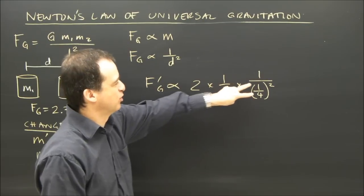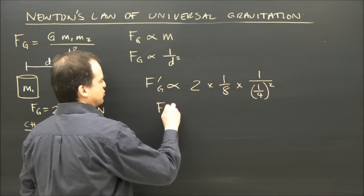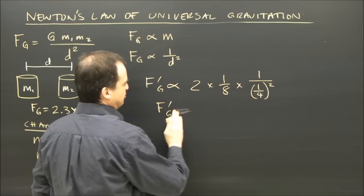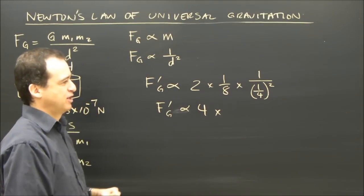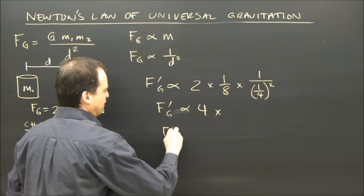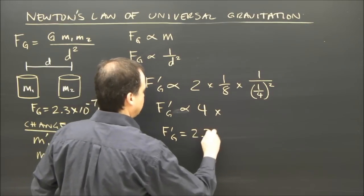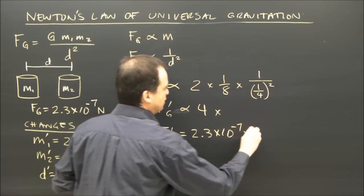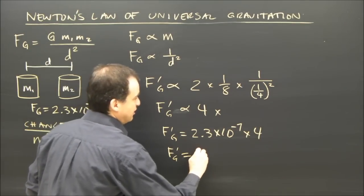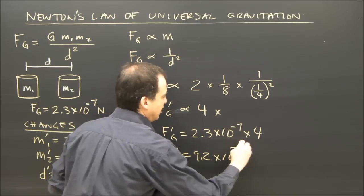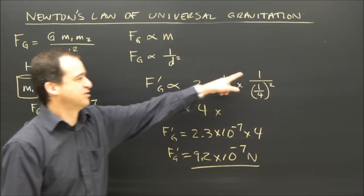So I multiply this all out — one-quarter squared, then inverted and put in the numerator. This all adds up to four times. Gravity is four times as big. So the new force of gravity is 2.3 times 10 to the negative 7 times 4 — four times bigger — giving a new force of gravity of 9.2 times 10 to the negative 7 newtons. Directly with the mass, directly with the mass, inversely with the square.